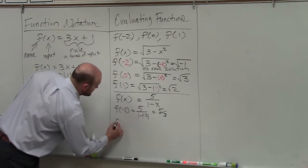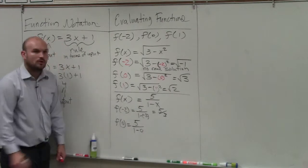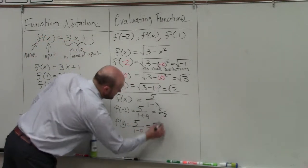Let's do f of 0. f of 0 is 5 over 1 minus 0. 1 minus 0 is 1. 5 divided by 1 is 5.